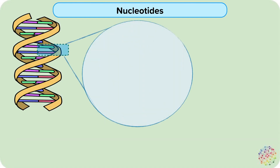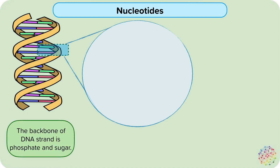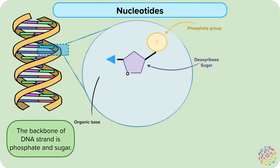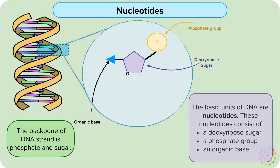The backbone of the DNA strand is a phosphate group connected to a sugar. An organic base combines with these backbone elements to form a nucleotide. These nucleotides are the basic units, or monomers, of DNA. Each nucleotide consists of a deoxyribose sugar, a phosphate group, and an organic base. Each nucleotide monomer can join with others to create a long-chain DNA polymer.